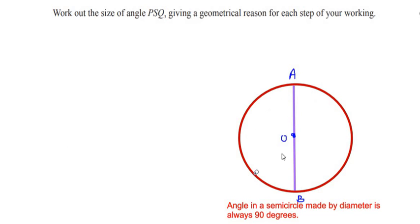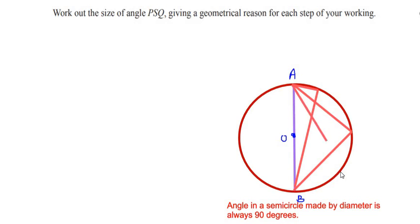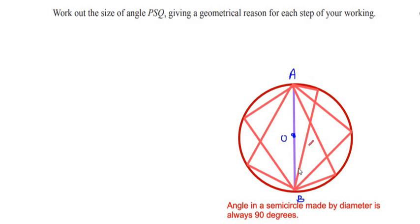I have drawn a circle with diameter AB passing through the center O. If you use the two endpoints of the diameter and make an angle in the semicircle, no matter where it is, you can draw it this way or that way — you can make any number of angles using the two endpoints of the diameter. They all turn out to be 90 degrees. So the statement of this theorem is: the angle in a semicircle made by the diameter is always 90 degrees.